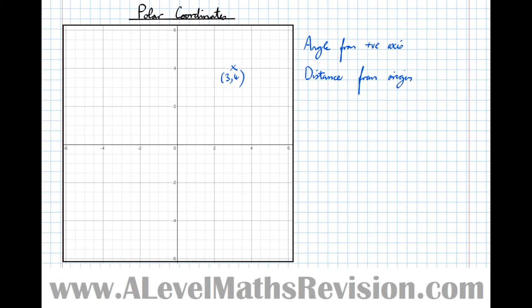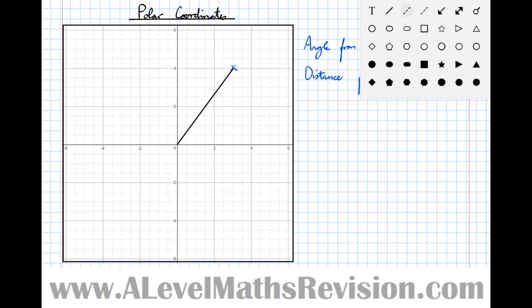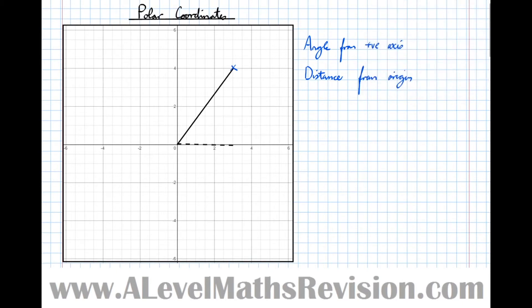So for example, this point here 3, 4, what we need to do to find out its polar coordinate: first of all, find the distance from the origin. We can see that the distance from the origin is easily calculated using Pythagoras.